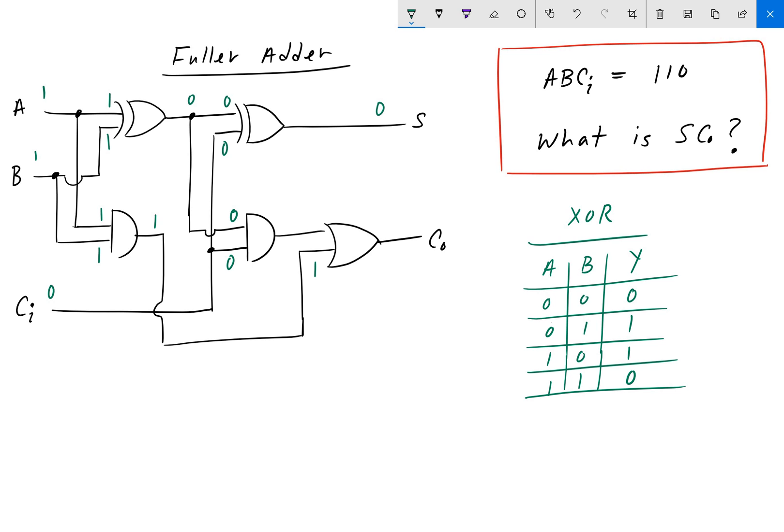And we have two 0s on the AND gate input, so 0 AND 0 is 0.